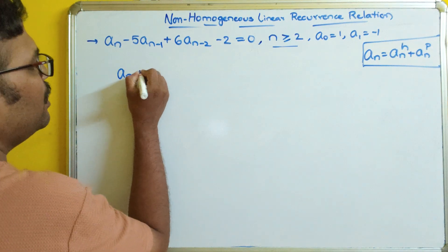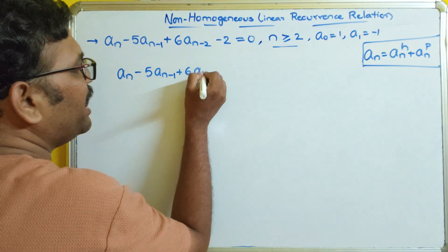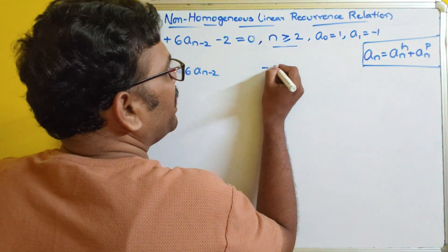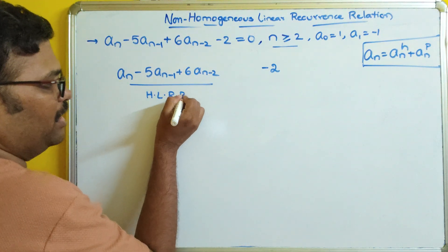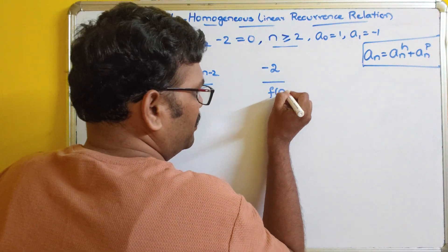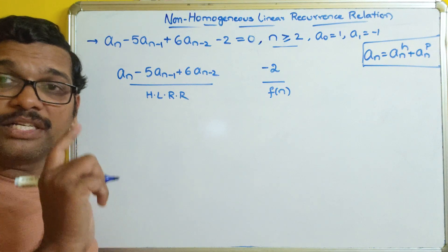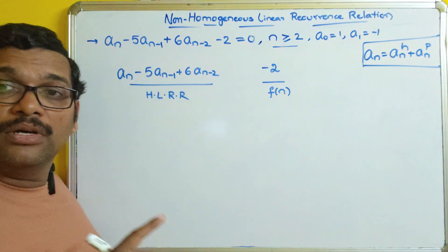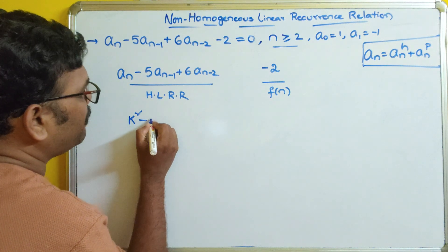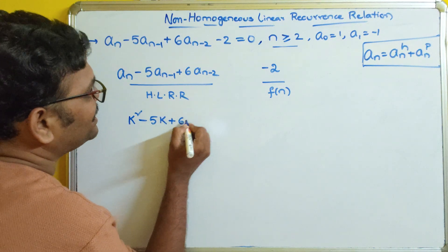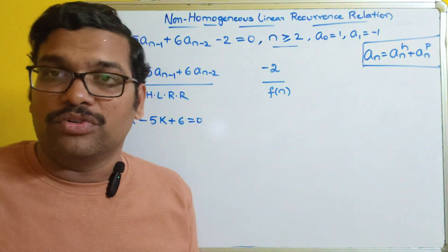The first part is a_n minus 5·a_(n-1) plus 6·a_(n-2), which is the homogeneous linear recurrence relation. The second part is f(n) = 2. We know the procedure to solve the homogeneous part. First, we convert it into the auxiliary equation, which becomes k² minus 5k plus 6 = 0.